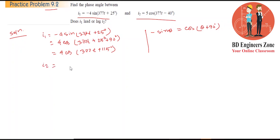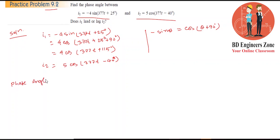i2 equals 30 at 50 minus 40 degrees. The phase angle difference type here could be calculated from the phase angle difference between i1 and i2.